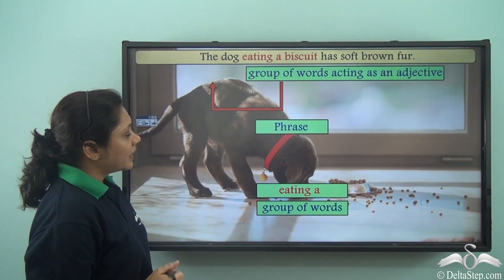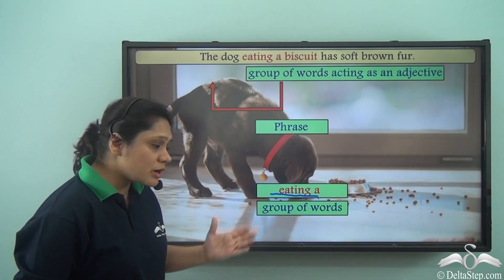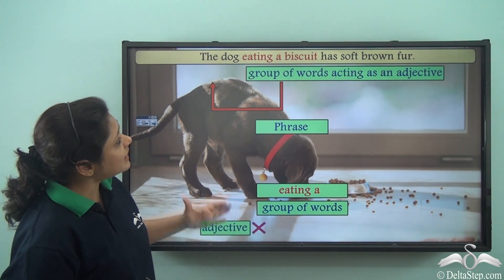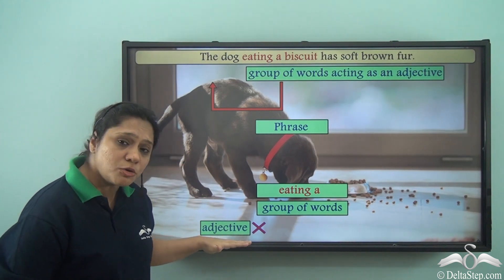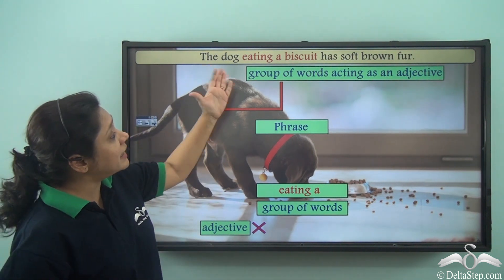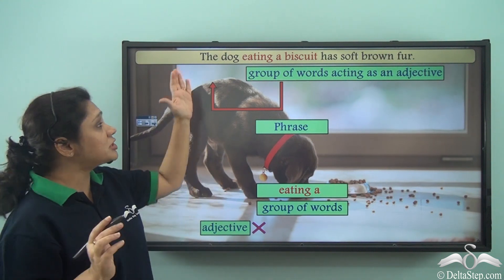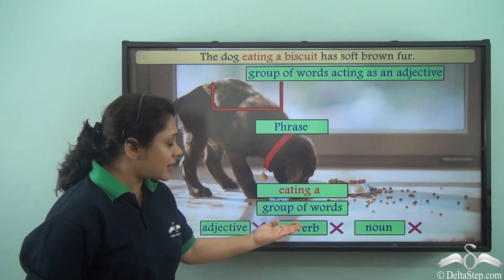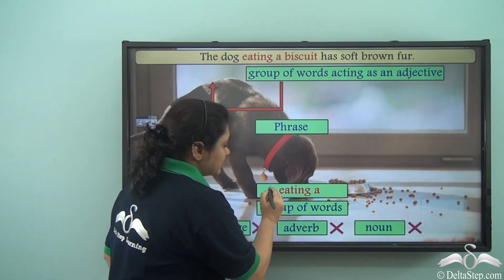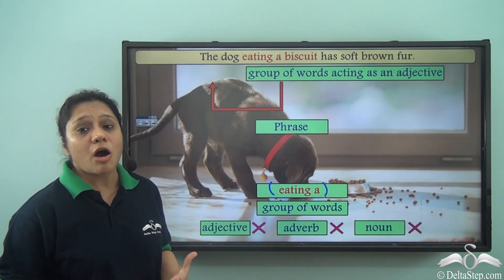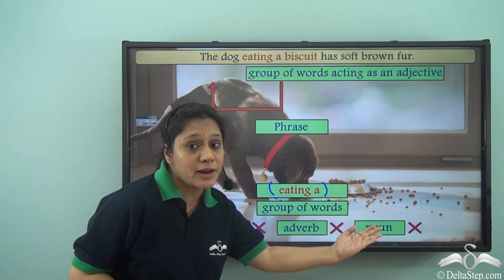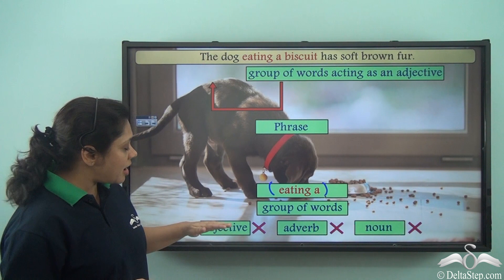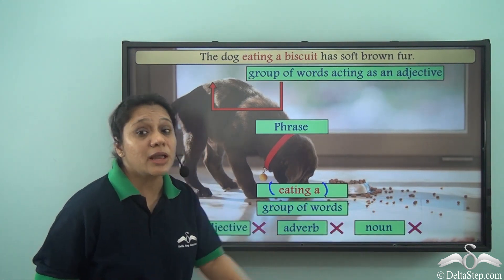So can we take any group of words and call it a phrase? Let us see. If we take the group of words 'eating a' — 'eating a' is also a group of words, but is it a phrase? No. We cannot call it a phrase, because 'eating a' is not describing the dog — it is not doing the complete work of an adjective. What is describing the dog? 'Eating a biscuit' — that is the complete phrase. So 'eating a' is not working as an adjective, adverb, or noun. Remember that any group of words does not become a phrase; only the group of words which does the work of an adjective, an adverb, or a noun is called a phrase.